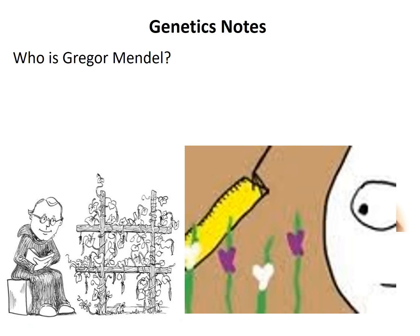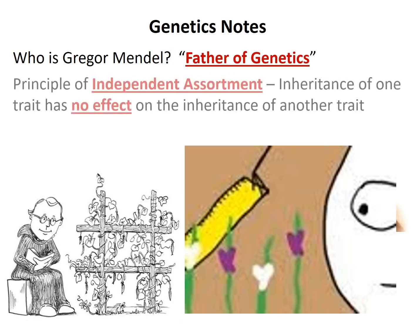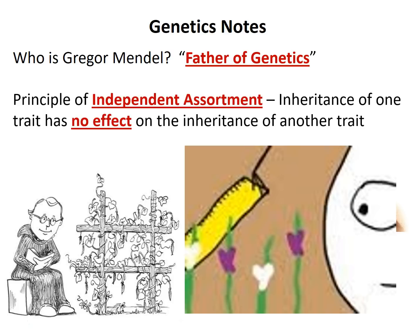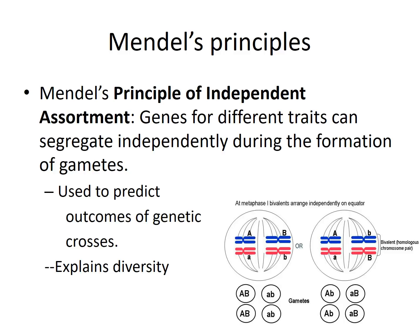Gregor Mendel was a monk who was one of the first to really talk about inheritance of traits, and he came up with a lot of these rules for inheritance. He's sometimes called the father of modern genetics. One of the principles he came up with was independent assortment, which says that inheritance of one trait has no effect on the inheritance of another trait. This isn't always true, but it's a good starting point. We'll start simple and then look at more complicated inheritance patterns.